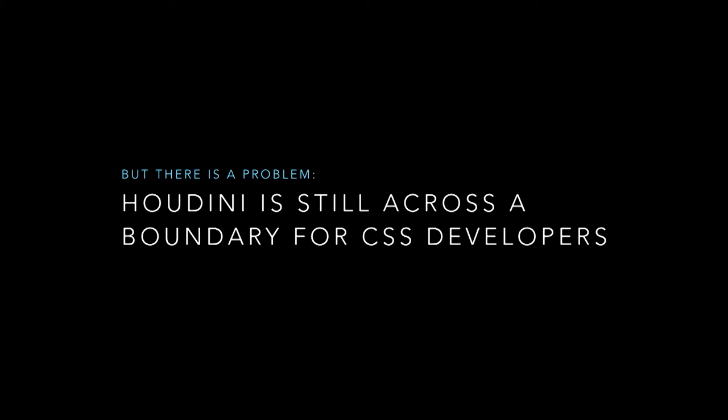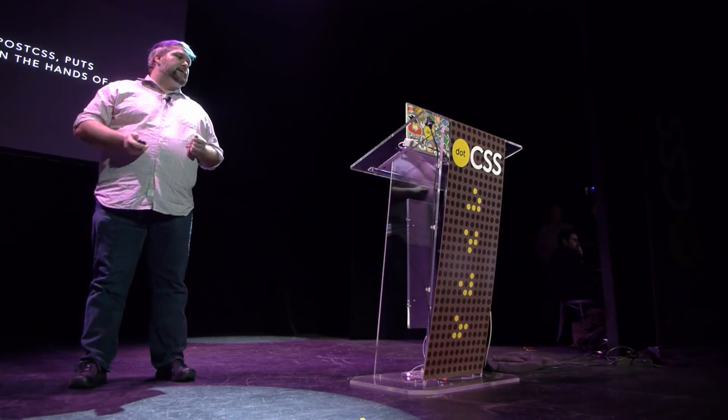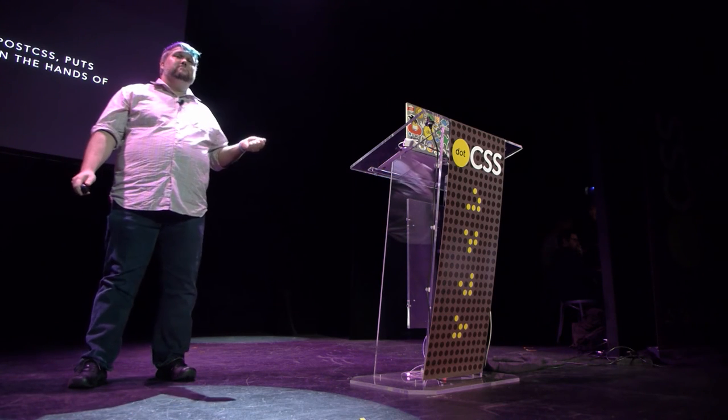But there's still a problem. Houdini is still across a boundary for many CSS developers — probably especially those 29% of people who don't think of themselves as developers. Houdini, like PostCSS, takes the extensibility that Sass put in the style sheet itself and puts it into the hands of JavaScript. JavaScript is a much better programming language than the Sass scripting language, especially for complex tasks. But forcing CSS to be a technology where we have to now learn JavaScript in order to extend the language we're working in as CSS developers — that worries me. Sass's success proves that native extensibility is both viable and beneficial to the CSS ecosystem.